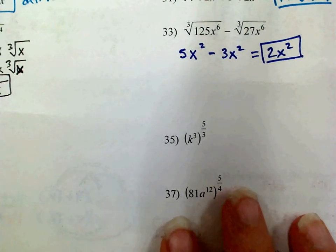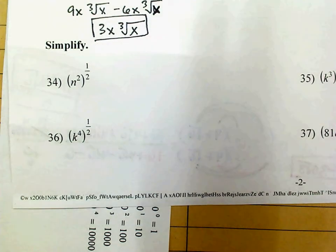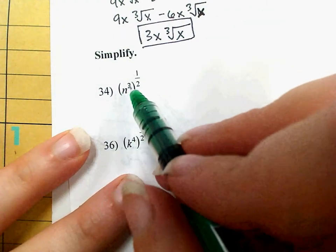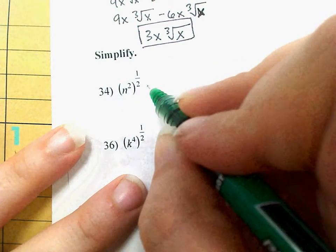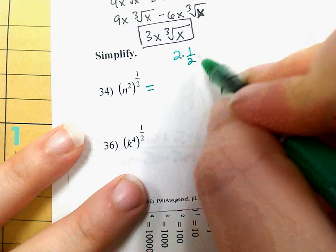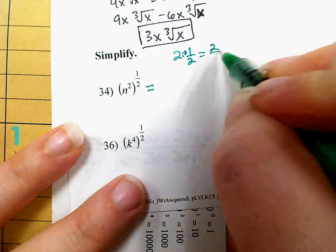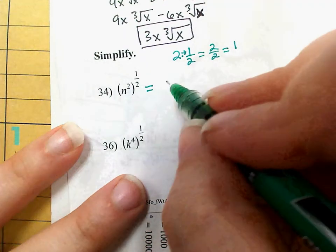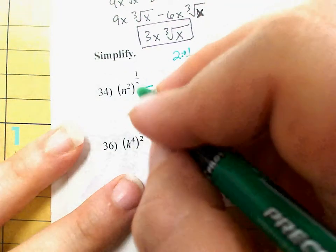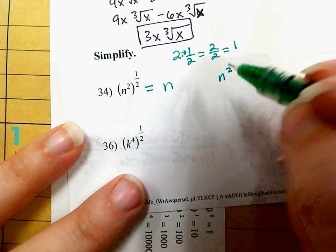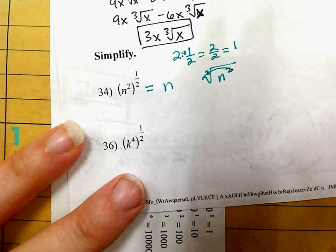On 34, I've got n squared to the 1 half. The rule is that when you raise a power and then have that raised to another power, you multiply the powers. So it's 2 times 1 half, which is 2 over 2, which is 1 — or the 2s simplify out — leaving you with just n. You could also look at it as n squared, where the 1 half power is like a square root, and the square root of a square cancel each other out. Either way, you get n.